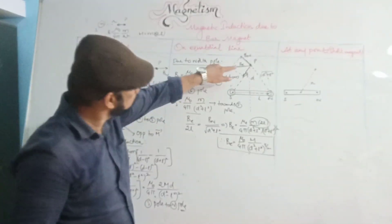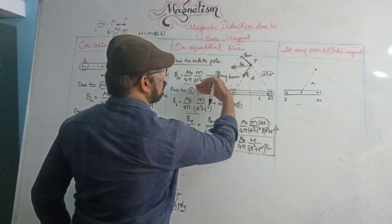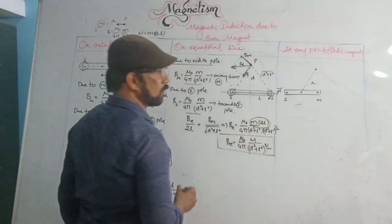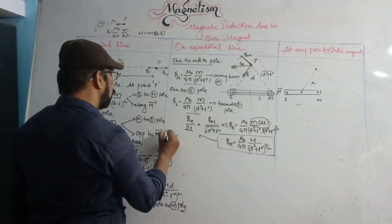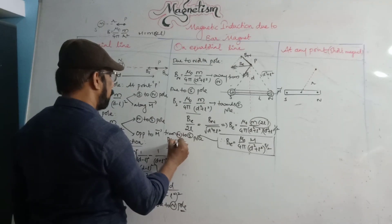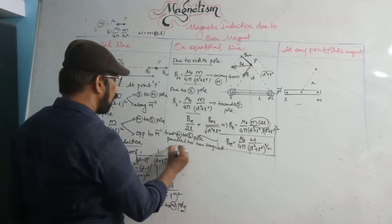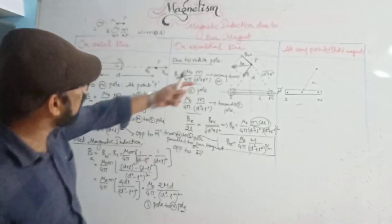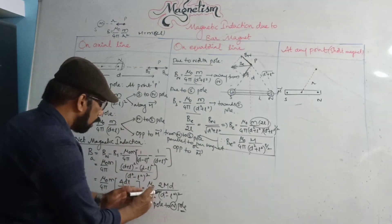The direction of BE: the resultant is oriented from north pole to south pole — parallel to the bar magnet but opposite to M bar. So the direction of BE on the equatorial line is from north to south pole, i.e., opposite to M bar. For a short bar magnet, L << D, so L² can be neglected.